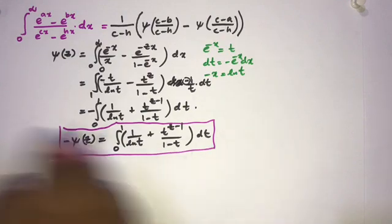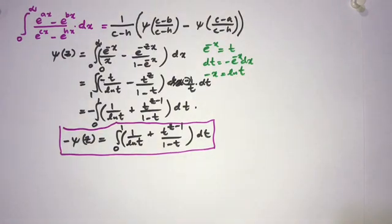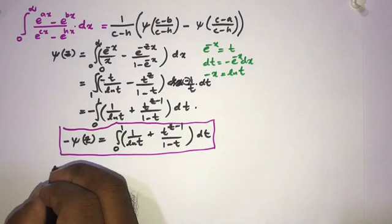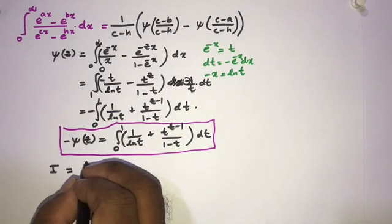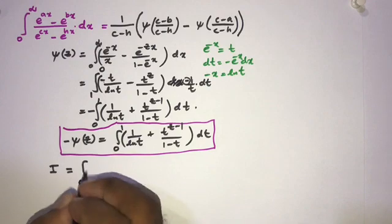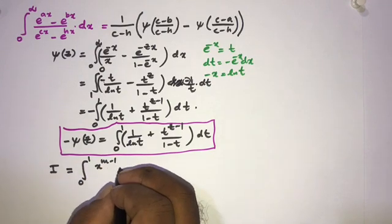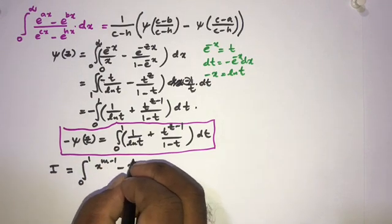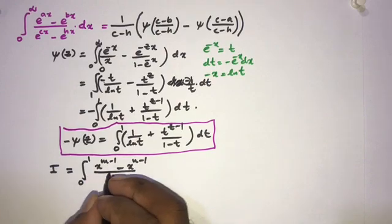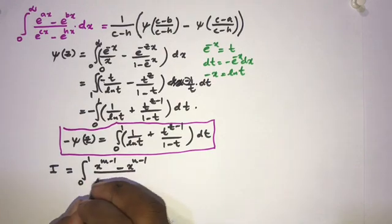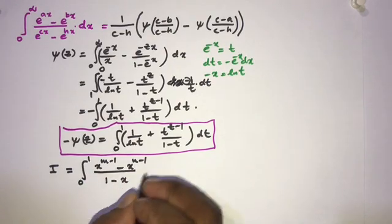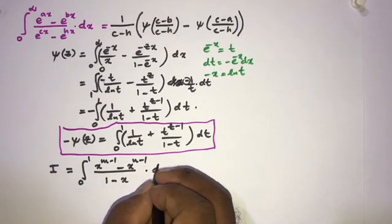Now I'm going to define a helper integral I. So we take I equal to the integral from 0 to 1 of (x^(m-1) - x^(n-1))/(1-x) dx.